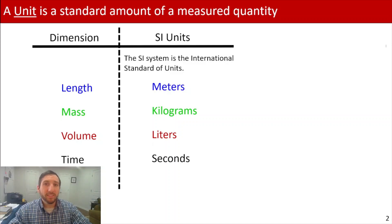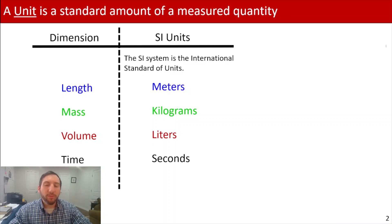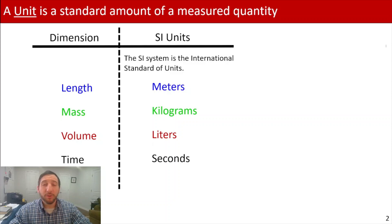It's a really convenient system because everything operates in a base 10. So if we're converting from, let's say, a meter to a kilometer, we know that there are a thousand meters in one kilometer. It's pretty nice, and it's a pretty common unit system used across the world.